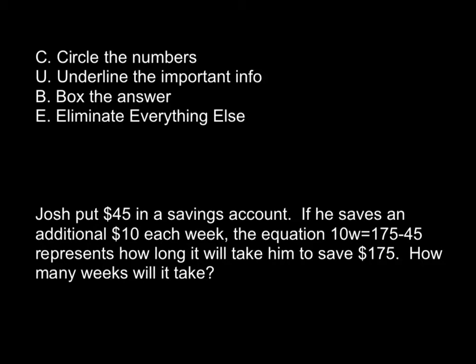Today we are going to work on the cube method for solving word problems. Our particular word problem is: Josh put $45 in his savings account. If he saves an additional $10 each week, the equation 10w equals 175 minus 45 represents how long it will take him to save $175. This problem is very in-depth and has a lot of information, so we are going to use the cube method to find the important information we need.